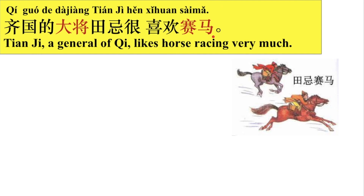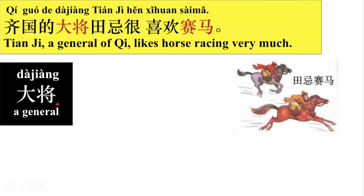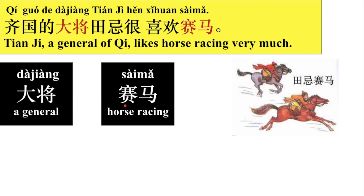齐国的大将田记很喜欢赛马。好，那我们来看一下。齐国，就是Kingdom齐。那齐国的大将田记，他的名字叫田记。田记是齐国的大将，他很喜欢赛马。赛马，赛就是比赛，马就是horse。那这个就是他们在赛马，看谁跑得快。